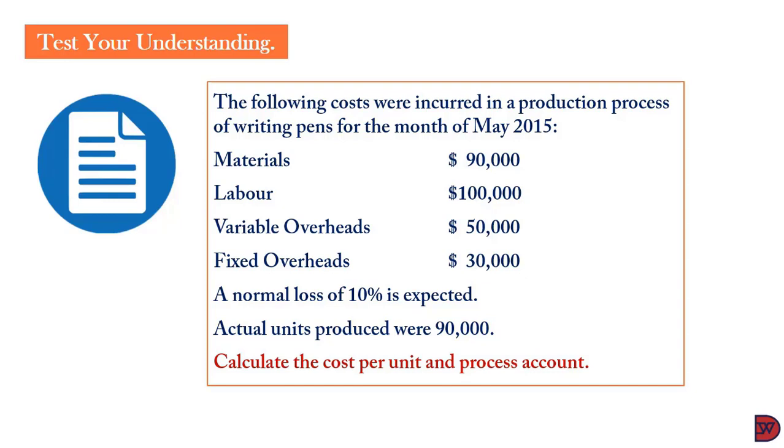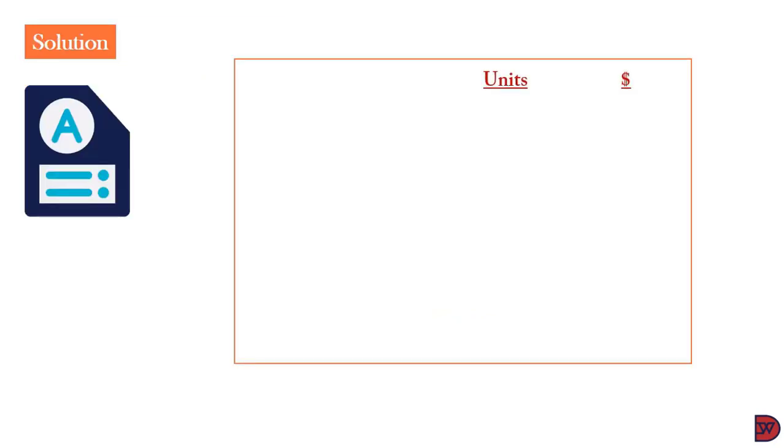If the actual produce was 90,000 units and 10% was expected, that means we are supposed to gross up this 90,000 by the 10% to arrive at the original expected output based on the inputs that was made. When we come to the solution, we'll start with estimating the total cost of production to arrive at the cost per unit.